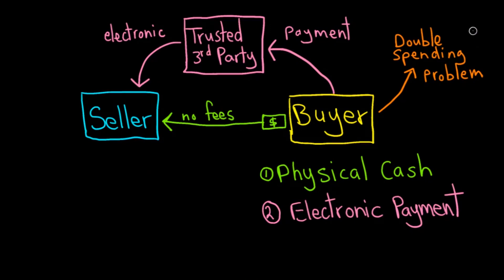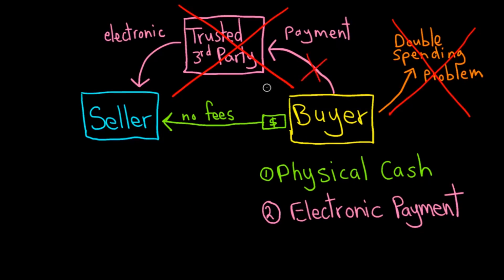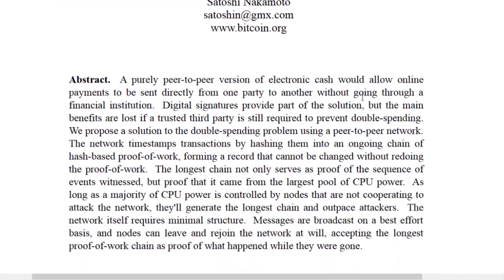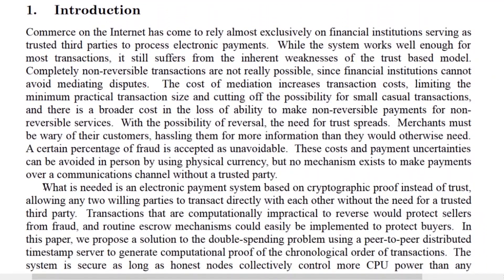Now the question is: if Bitcoin has removed the double spending problem, then what need is there for a trusted third party? The answer is: none. Just as physical cash had no need for a trusted third party, now electronic payments don't need one either — and their fees go away too. Because Bitcoin can do everything that the trusted third party was doing, but better: Bitcoin is faster and cheaper. This is what is mentioned in Bitcoin's white paper, where it says: 'What is needed is an electronic payment system based on cryptographic proof instead of trust, allowing any two willing parties to transact directly with each other without the need for a trusted third party.'